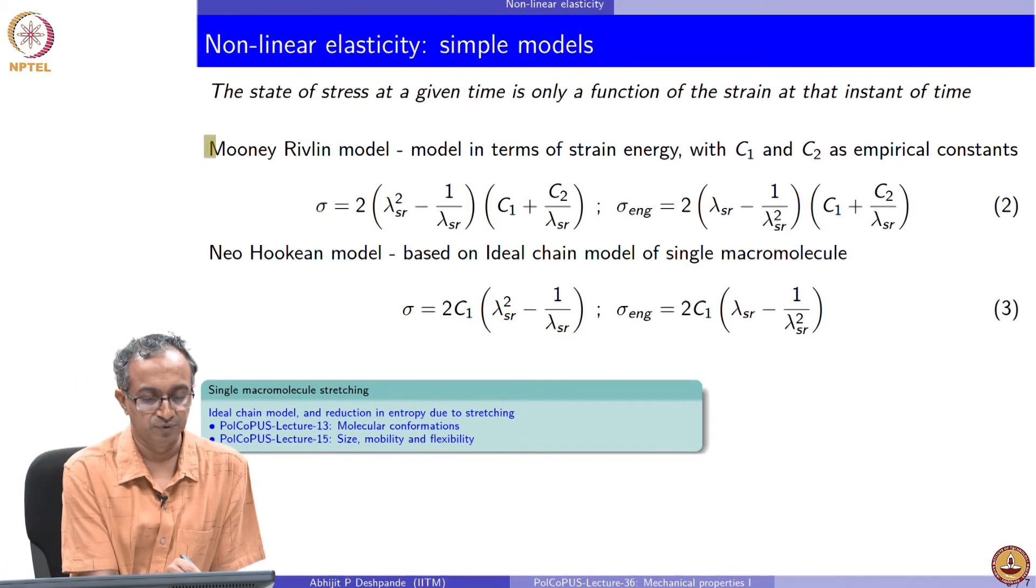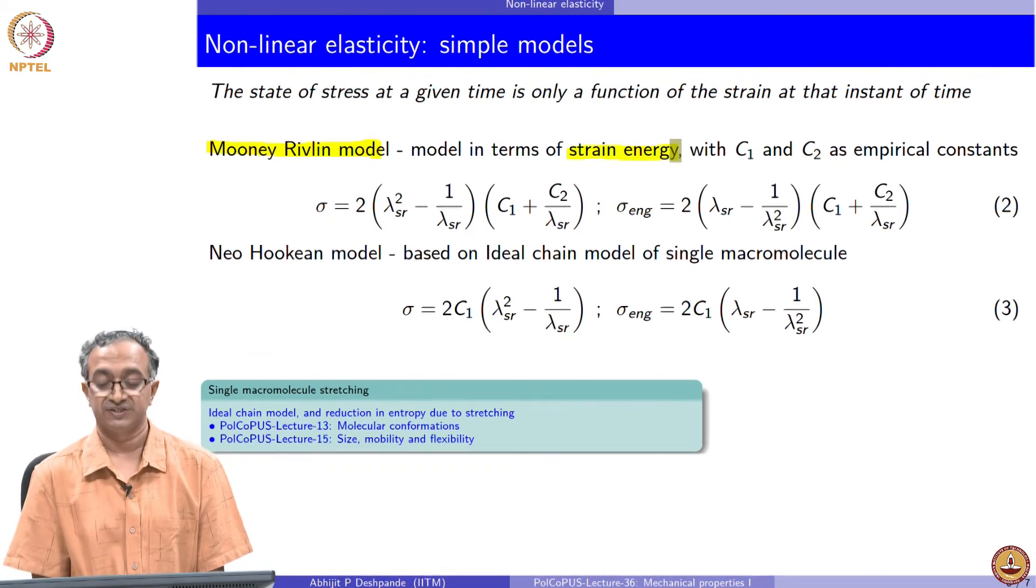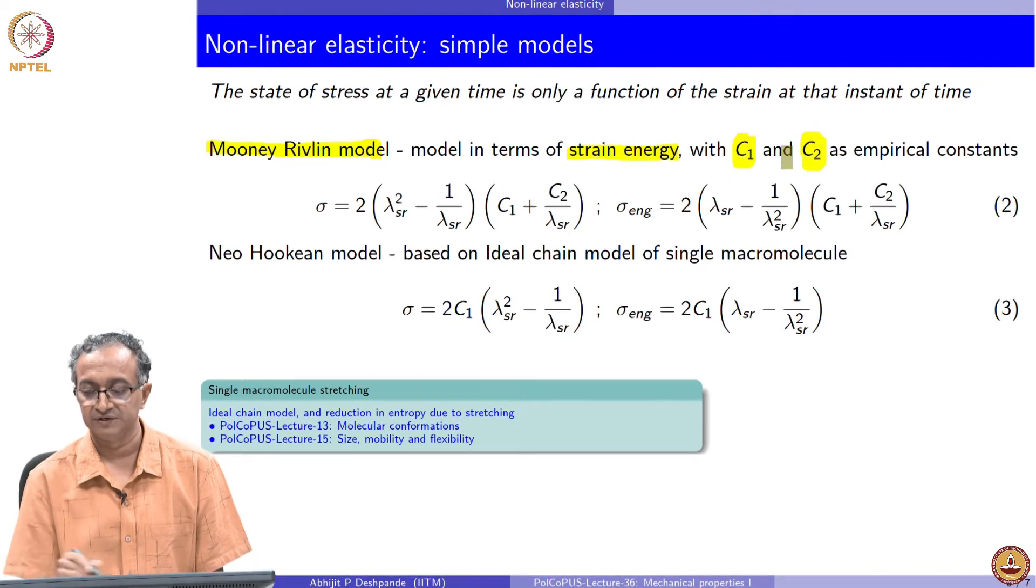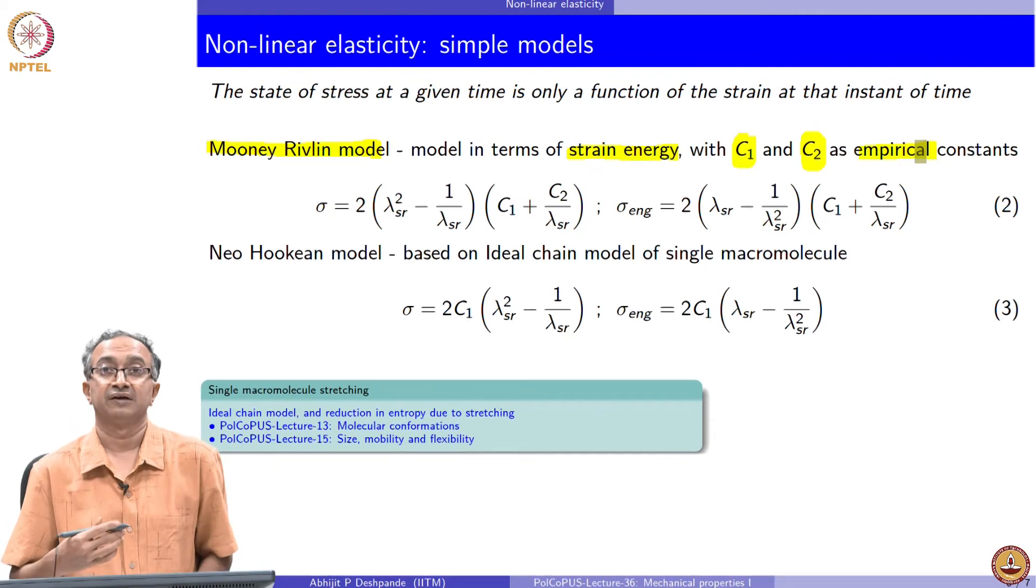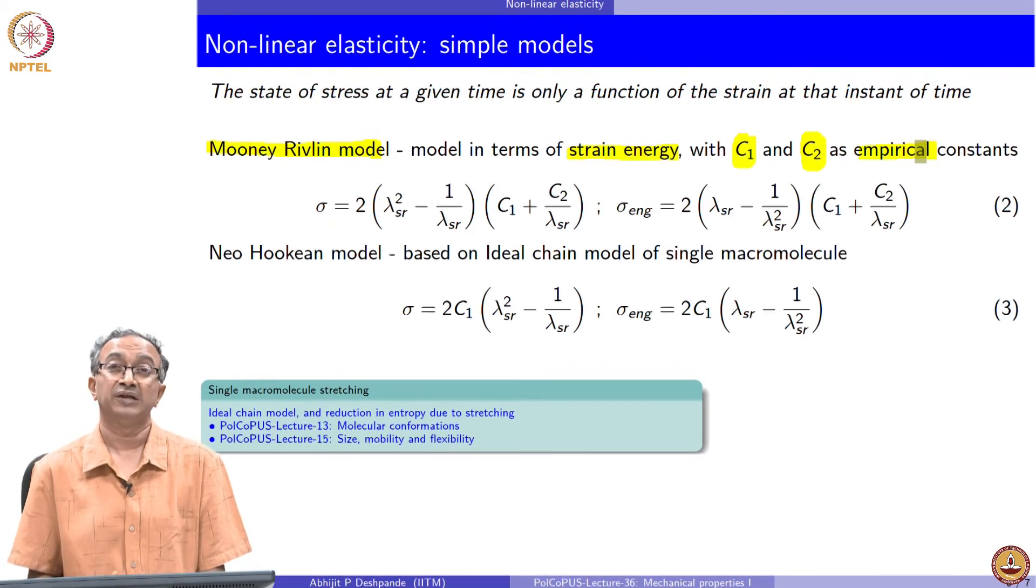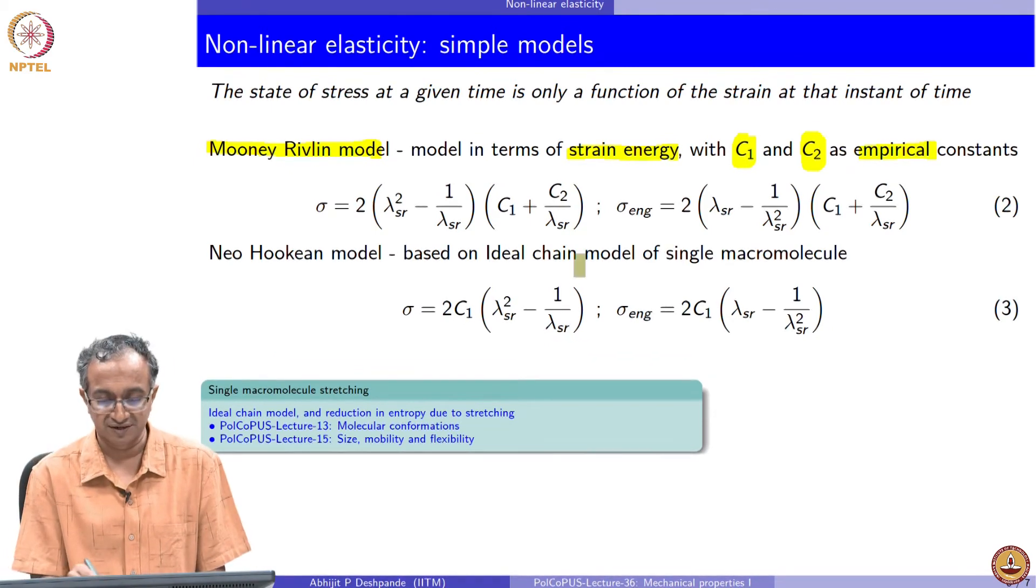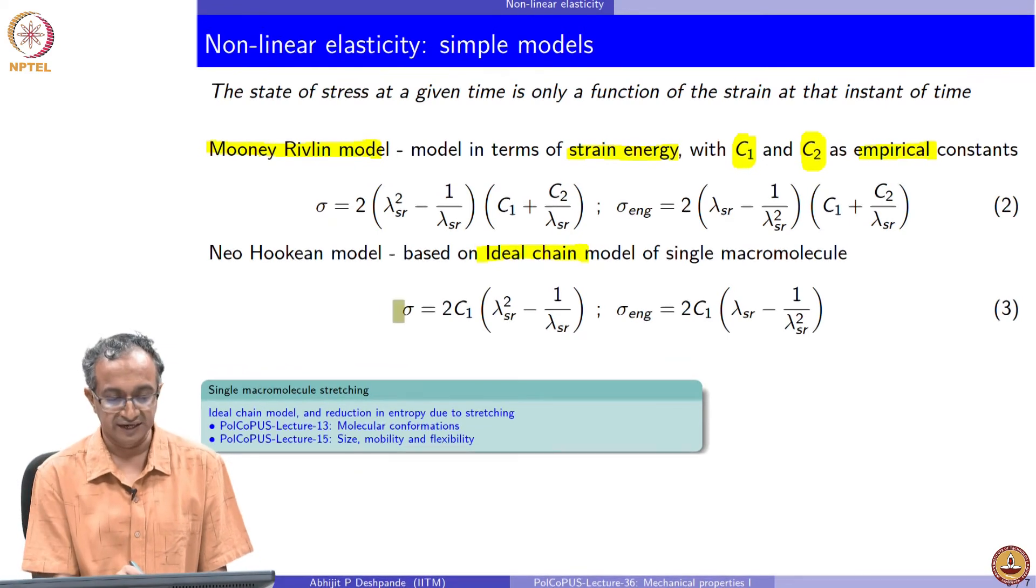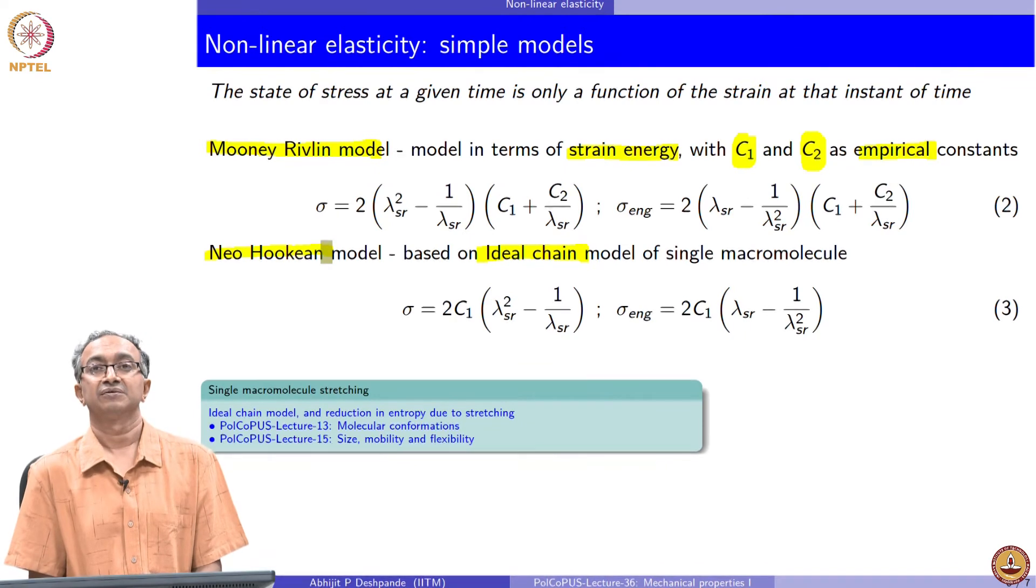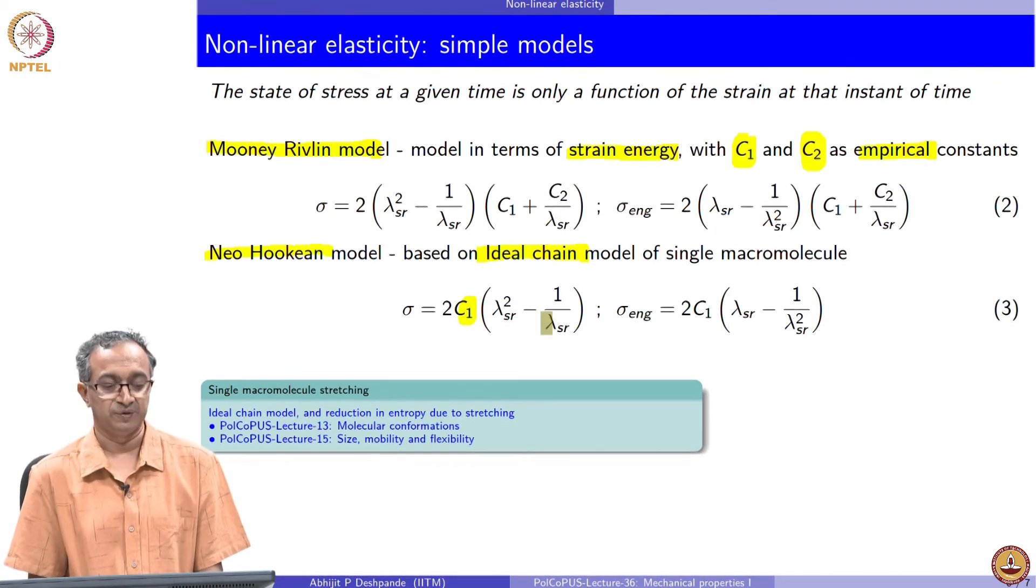These are two different models. Mooney-Rivlin is a phenomenological model which is arrived by specifying a specific strain energy and it has two constants which are empirical. We will solve problems related to both of these models to give us an idea how linear and non-linear elasticity is very different. In terms of the ideal chain model directly giving us a Neo-Hookian model, in this case there is one coefficient C1 and you can see the similarity between Neo-Hookian and Mooney-Rivlin model.